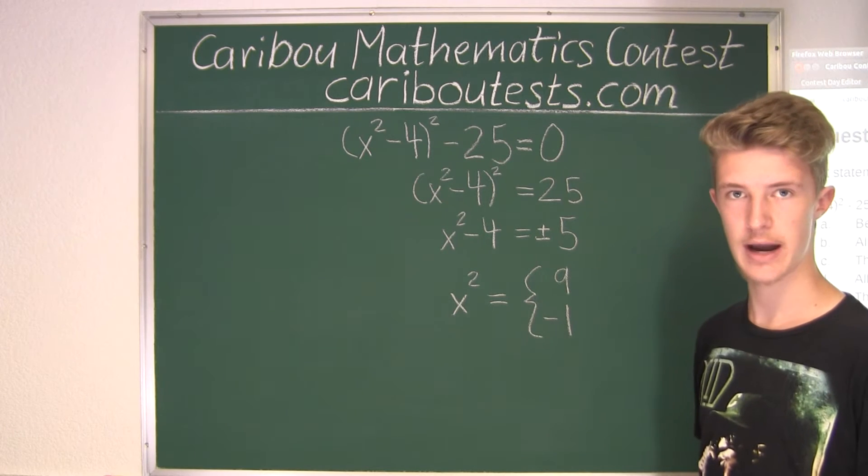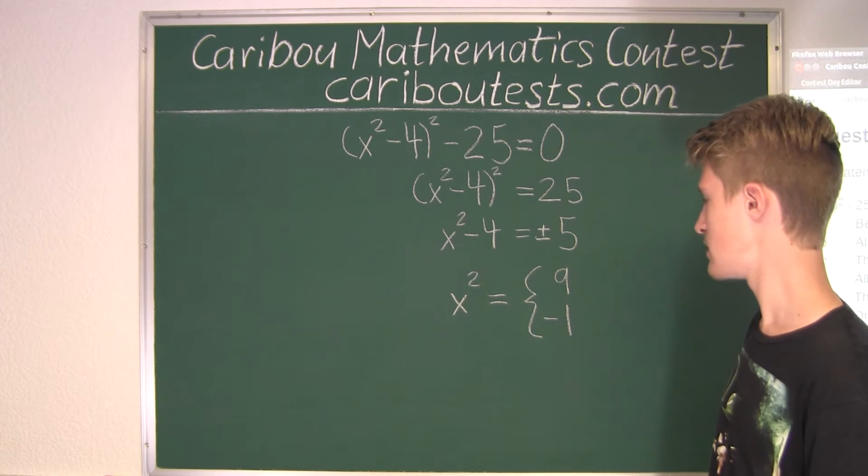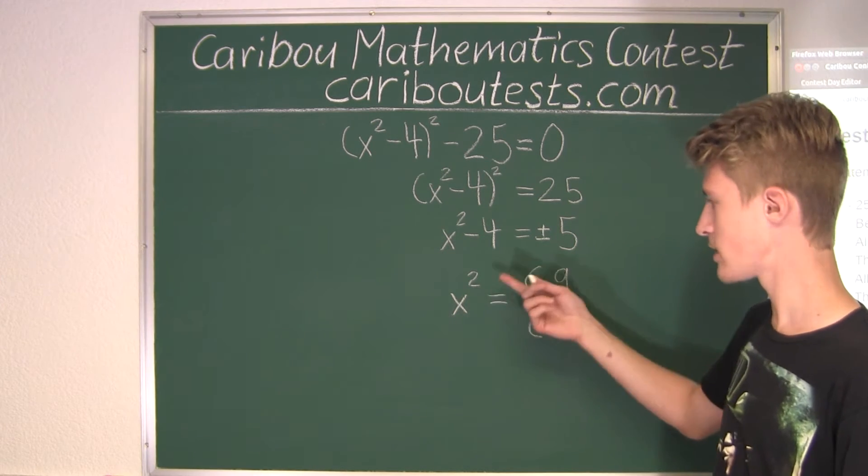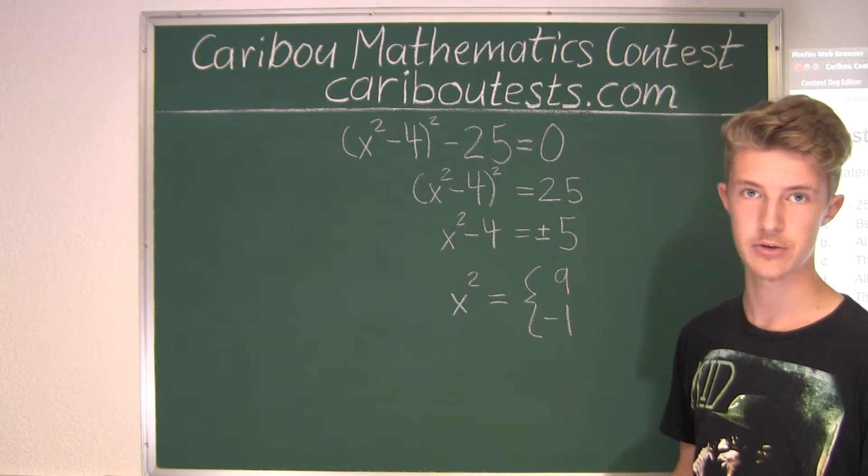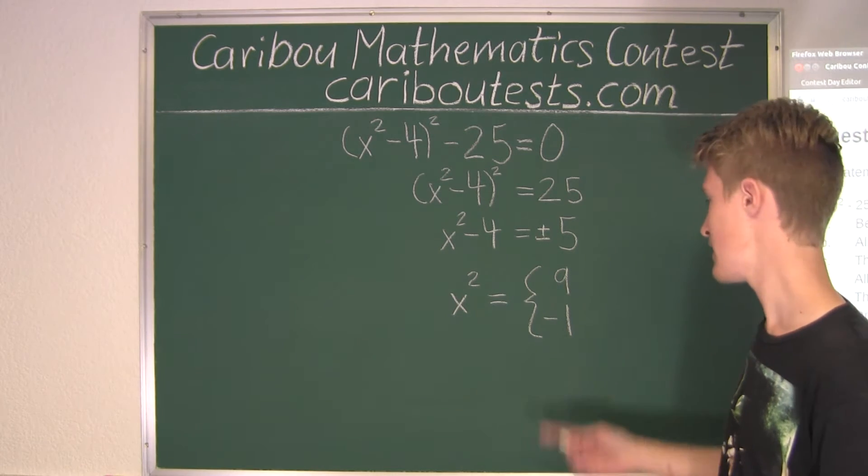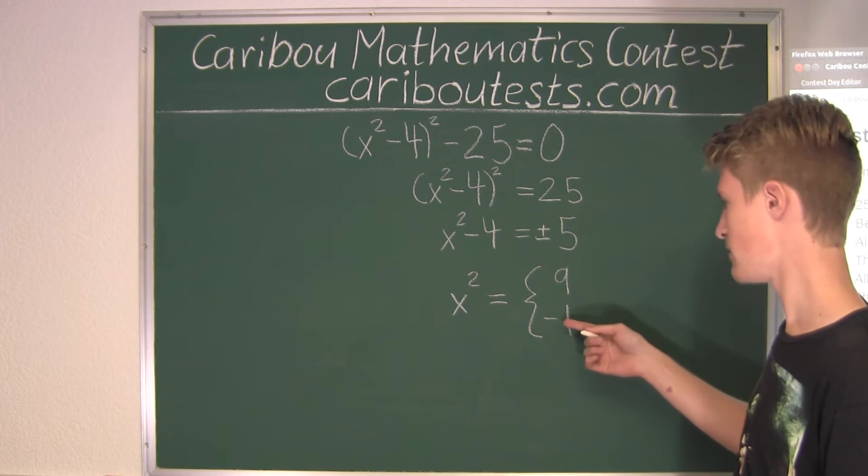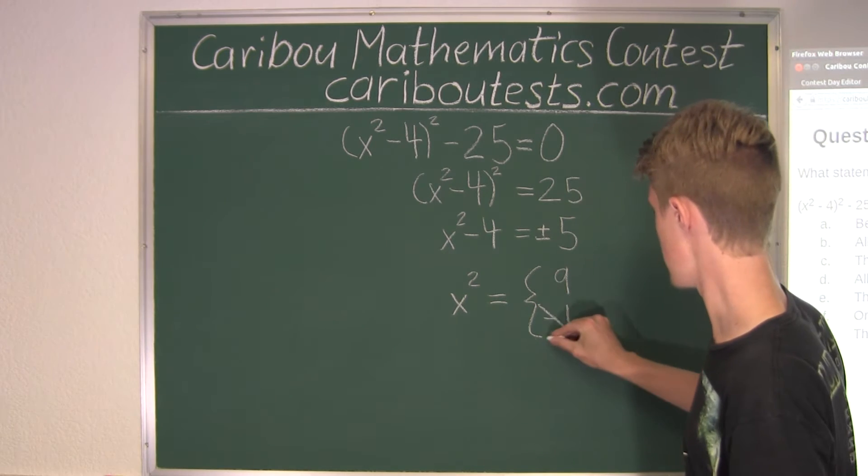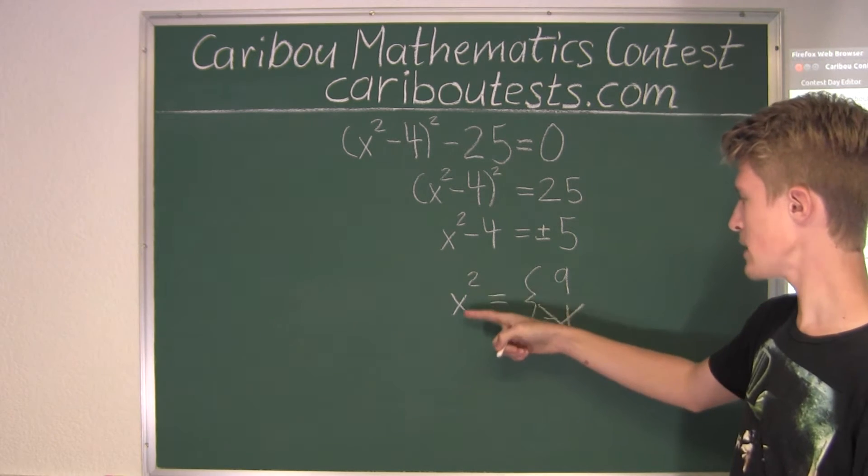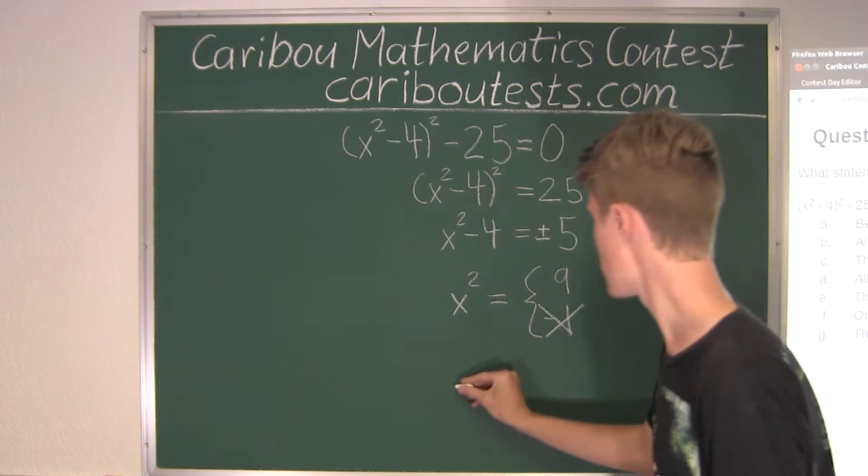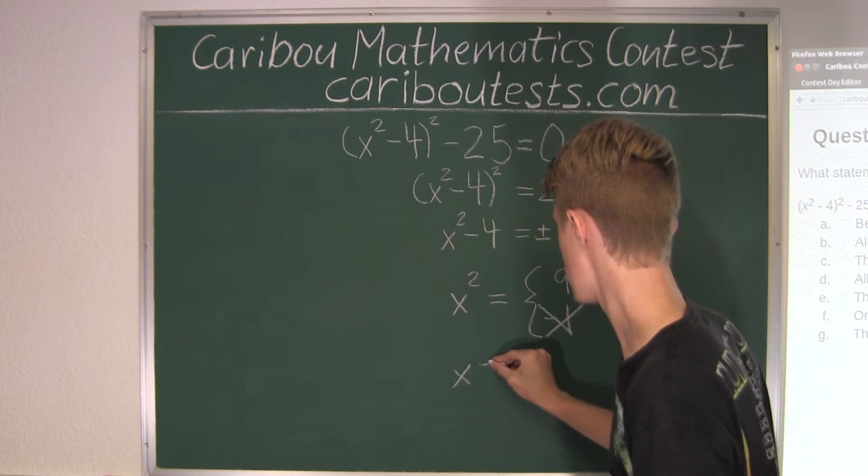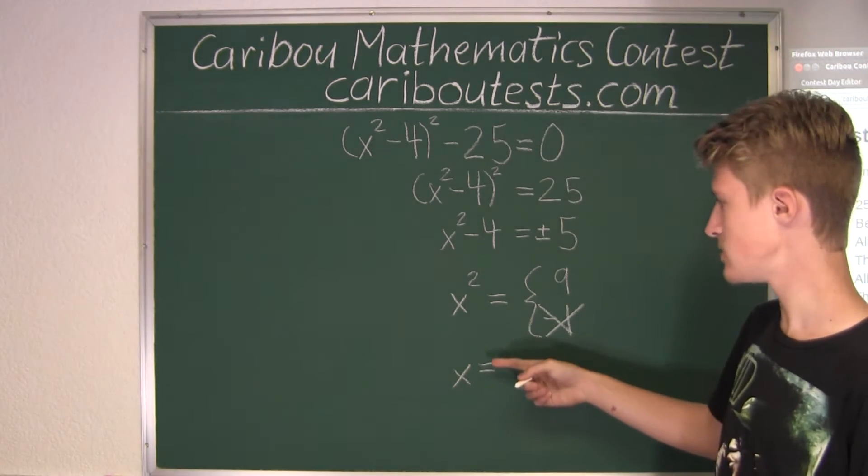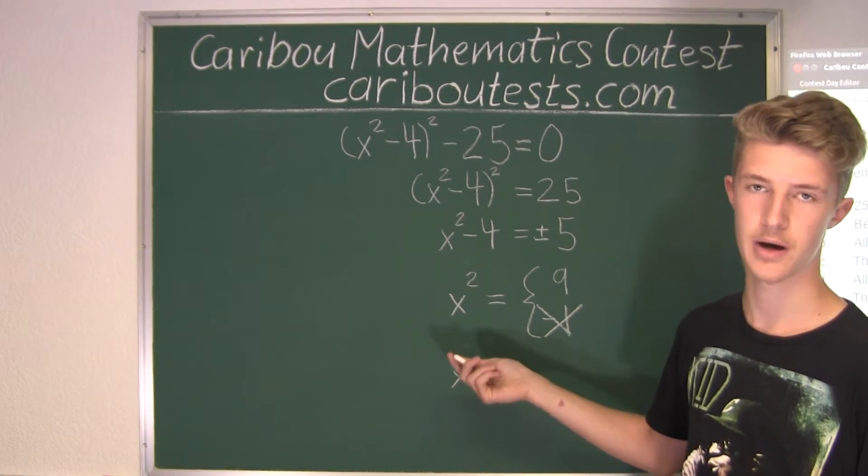But for any integer x, x squared can only be equal to either 0 or a positive number. It can't be equal to negative 1. So therefore, that is not possible. So we know x squared is equal to 9, and therefore, x must be equal to either negative or positive 3.